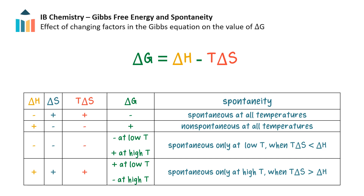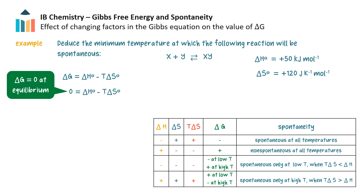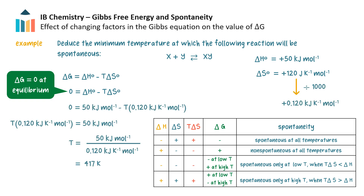Let's look at a related problem where we use the Gibbs equation to deduce the temperature at which a reaction becomes spontaneous. Deduce the minimum temperature at which the following reaction will be spontaneous. To do this problem, we first need to find the temperature at which the reaction switches between spontaneous and non-spontaneous. This temperature is the equilibrium temperature. At equilibrium, delta G is equal to zero, and so we make delta G equal to zero. Next, we substitute the change in enthalpy and entropy values and solve.